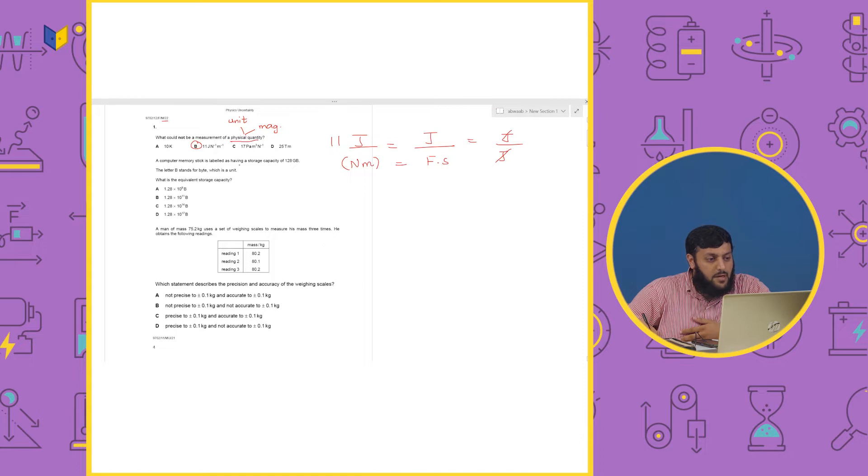Then, it says, a computer memory stick is labelled as having a storage capacity of 128 gigabytes. Right? So, what do we call giga? 128 giga means exponent 9. So, if we convert scientific notation, so this would be 1.28 exponent 11.